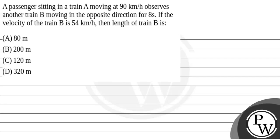Hello, let's read the question. This question states that a passenger sitting in train A moving at 90 km per hour observes train B moving in the opposite direction for 8 seconds. If the velocity of train B is 54 km per hour, then the length of train B is?